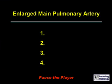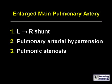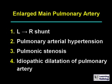The differential diagnosis is for an enlarged main pulmonary artery. There are four major causes. The four major causes of an enlarged main pulmonary artery are a left to right shunt, pulmonary arterial hypertension, pulmonic stenosis, and idiopathic dilatation of the pulmonary artery.